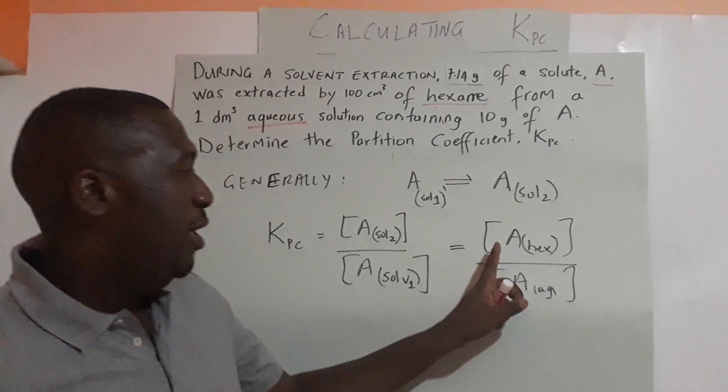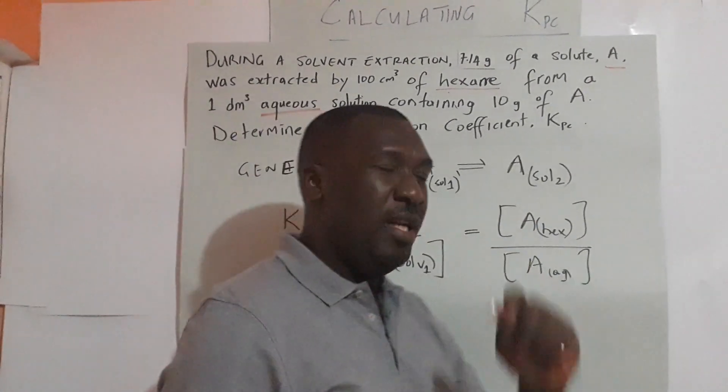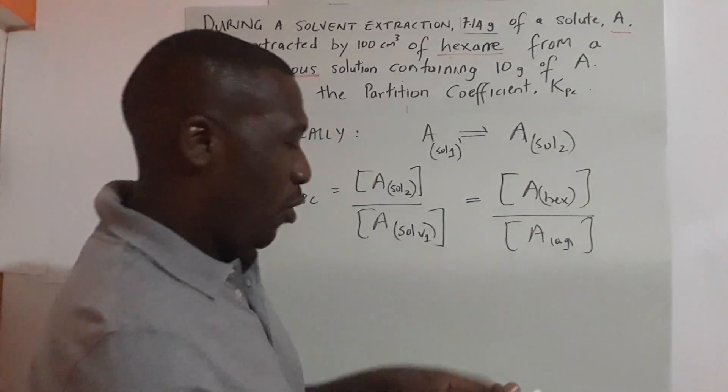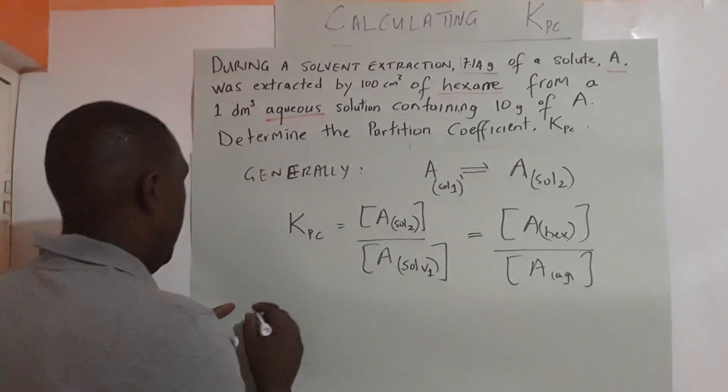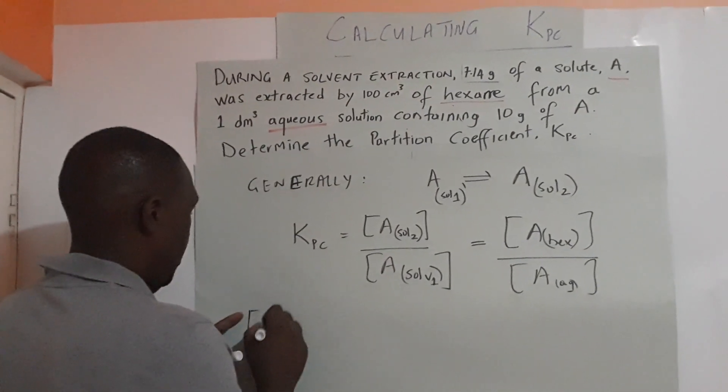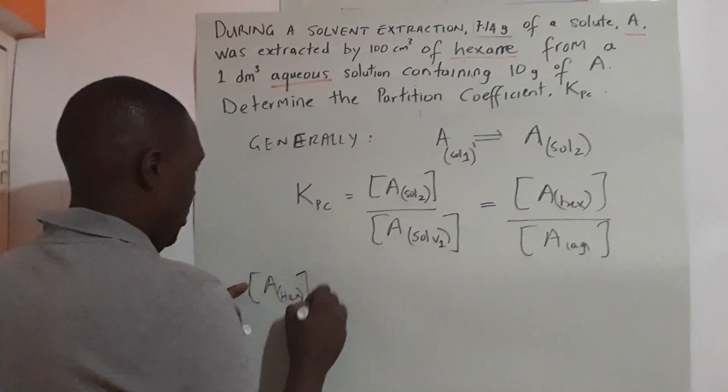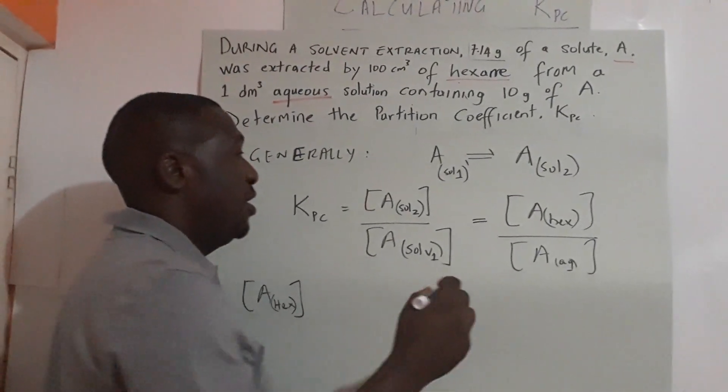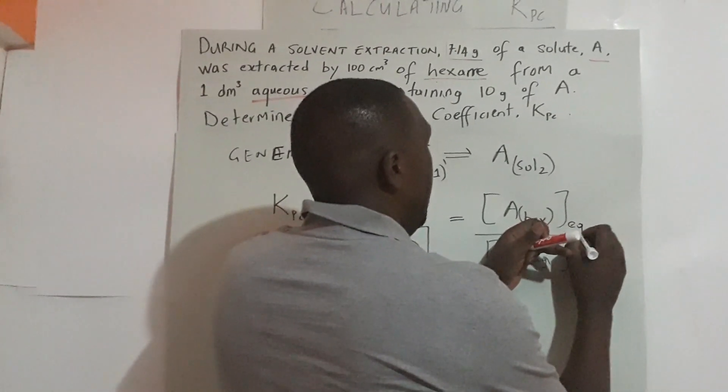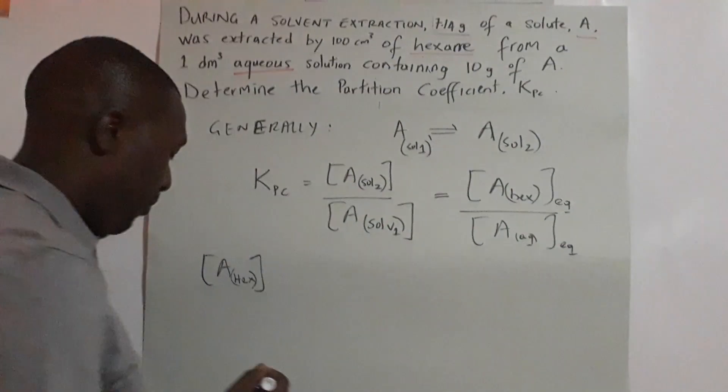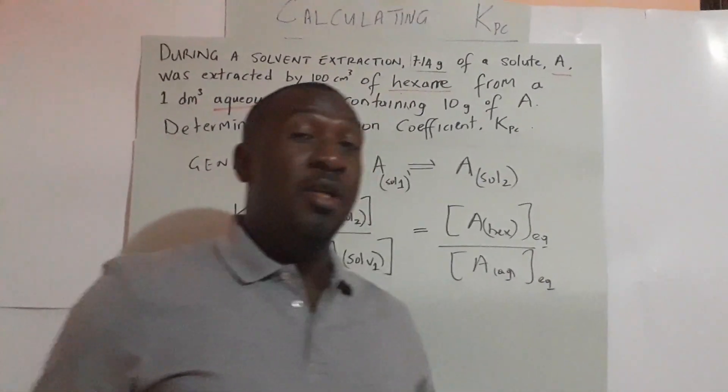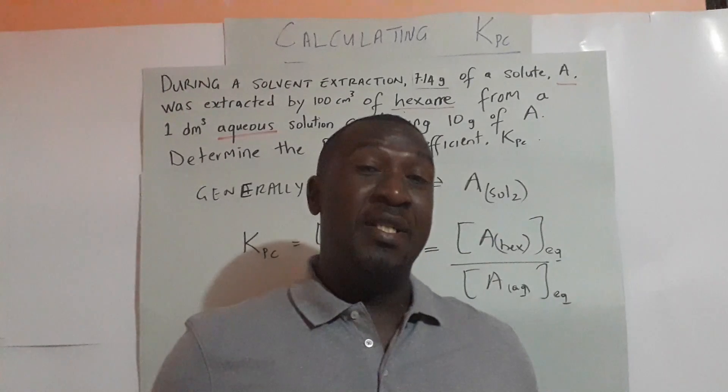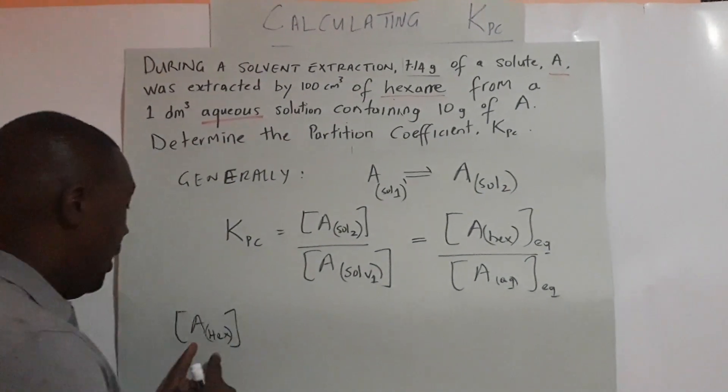Now all we have to do is figure out what is A in hexane and what is A in aqueous, then do the calculation. Let's start with A in hexane. I want to remind us that these concentrations must be equilibrium concentrations. Equilibrium occurs when you have mixed your solutes and solvents, shaken it, and allowed it to stand for a period of time.